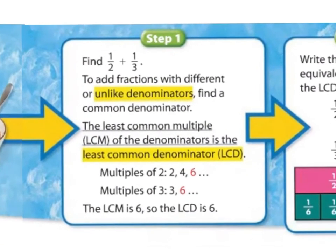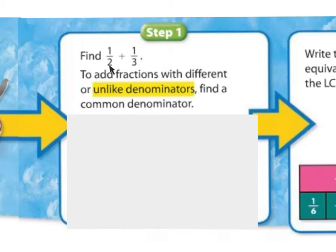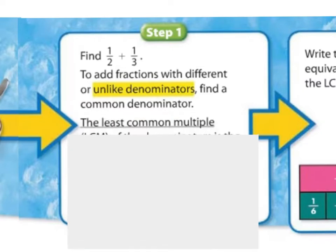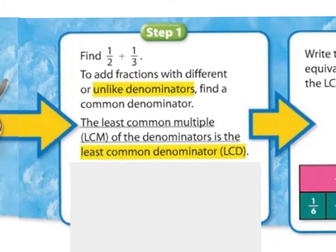So, step one. We're going to add one-half plus one-third. To add fractions with different or unlike denominators, we need to find a common denominator, which is basically the same thing as common multiple. The least common multiple of the denominators is a least common denominator, exactly the same as the multiple. We just replaced it with the word denominator, because it's the bottom number.